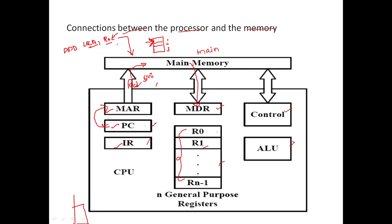The MDR is the Memory Data Register. The contents of the MDR are then transferred to the Instruction Register. Now the instruction is ready to be decoded and executed. Until this point the instruction has not been decoded — decoding happens once the contents are transferred from the MDR to the Instruction Register.